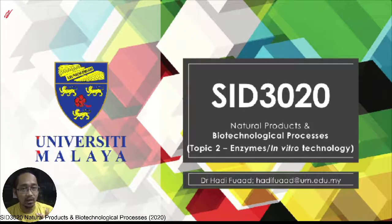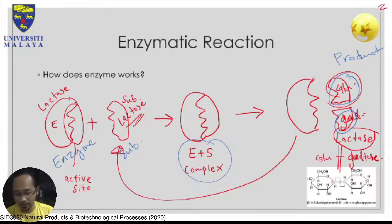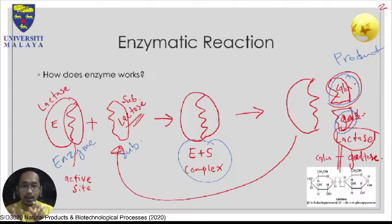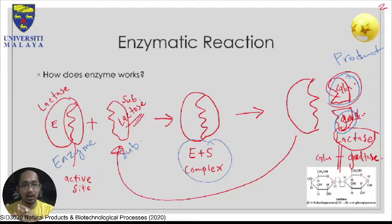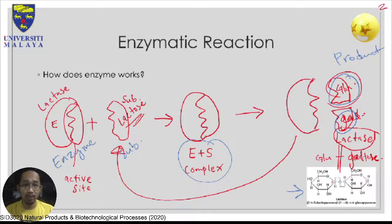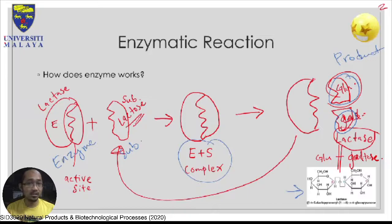We've looked at a basic overview of how enzyme reactions work. You have the enzyme, then a substrate compatible with that enzyme. When they are compatible, the substrate binds to the enzyme's active site forming the enzyme-substrate complex, and the biochemical reaction takes place producing products — for example, the lactase enzyme working on lactose to form glucose and galactose.